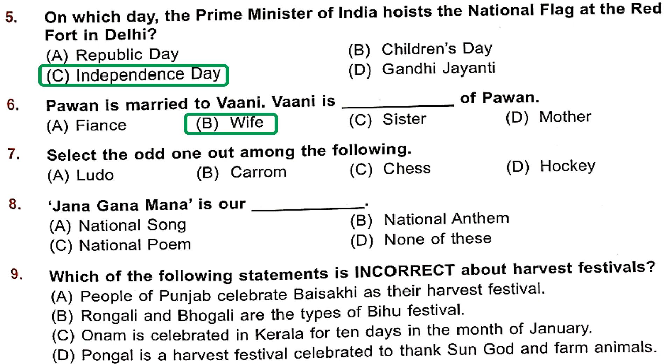Question 7: Select the odd one out among ludo, carom, chess and hockey. Ludo, carom and chess are all indoor games, while hockey is an outdoor game. So Option D is the right answer.